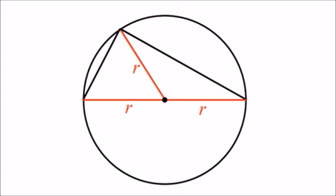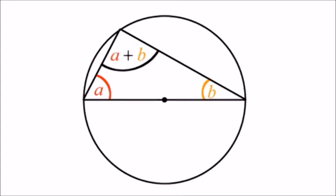They must therefore both be isosceles triangles. Because each small triangle is isosceles, they must each have two equal angles. The sum of internal angles in any triangle is 180 degrees. By comparison with our previous diagram,